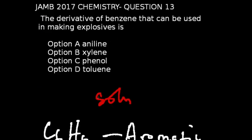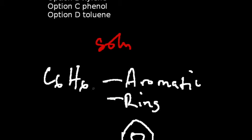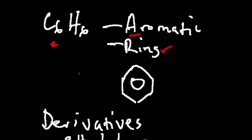Question number 13 of the JAMB 2017 chemistry exams: The derivative of benzene that can be used in making explosives is... This is a question on organic chemistry. Benzene is a six carbon compound and belongs to aromatic hydrocarbons and has a ring form. You can see that down here, this is how benzene looks like with the six carbon atoms.